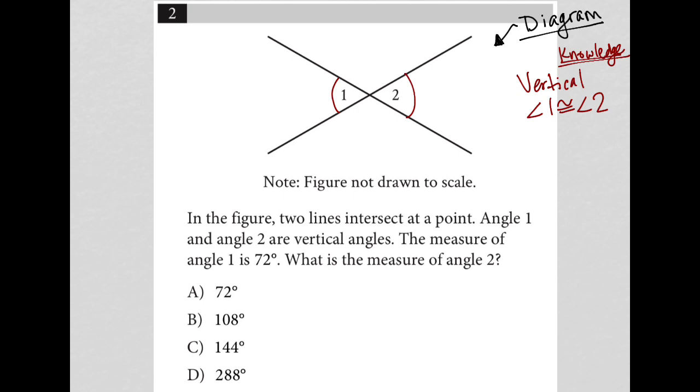The question goes on to say: in the figure, two lines intersect at a point. Angle one and angle two are vertical angles. OK, so it does mention that. The measure of angle one is 72 degrees. What is the measure of angle two?